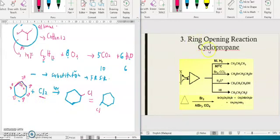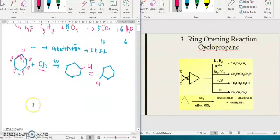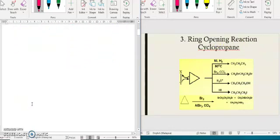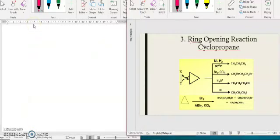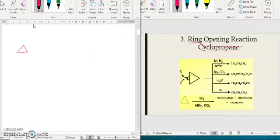But for the cyclopropane, which is a small ring structure, the reaction is special sebab dia akan buat ring opening reactions. Bermaksud ring structure dia akan disrupted atau dia akan pecah. Dia akan putus. So bila putus, dia akan jadi, contoh...